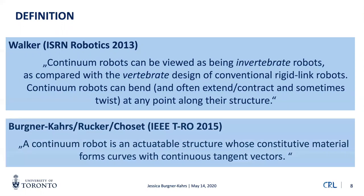My colleague Caleb Rucker and I formalized this definition to get a more mathematical description: a continuum robot is an actuatable structure whose constitutive material forms a curve with continuous tangent vectors.